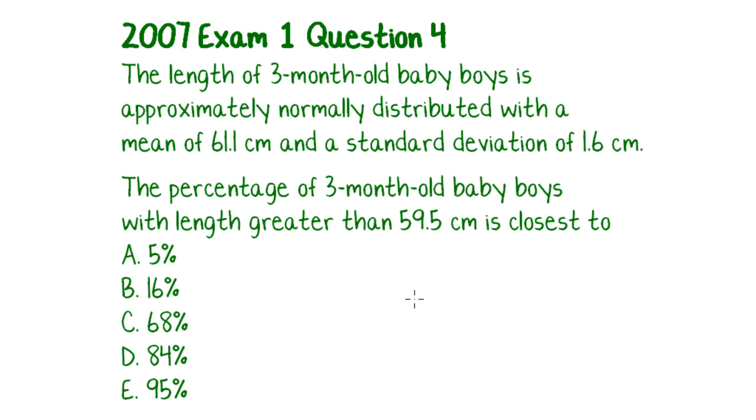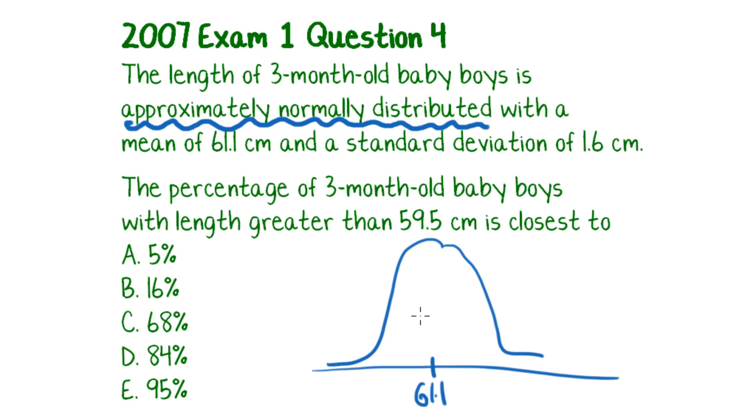So how is this sort of thing examined? Well this is a question that appeared on the 2007 Exam 1. This was question 4, and this is asking you to use that rule. So the question says, the length of 3 month old baby boys is approximately normally distributed, there's those words you should look out for, with a mean of 61.1 centimeters and a standard deviation of 1.6 centimeters. The percentage of 3 month old baby boys with a length greater than 59.5 centimeters is closest to, and then they give you a bunch of options. So let's just quickly draw ourselves a little bell curve, with a mean in the middle of 61.1. Now you could fill in the intervals either side, so going down 3 and up 3, but 59.5 is obviously less than 61.1.